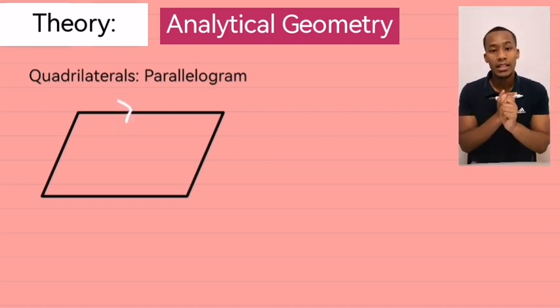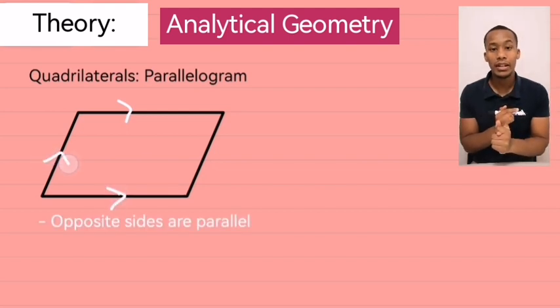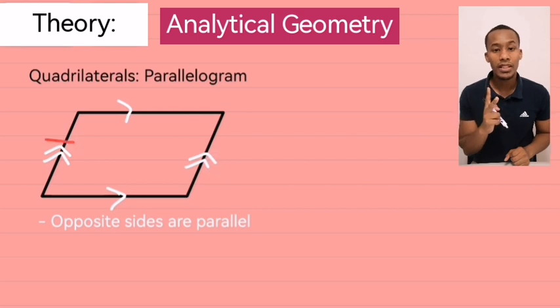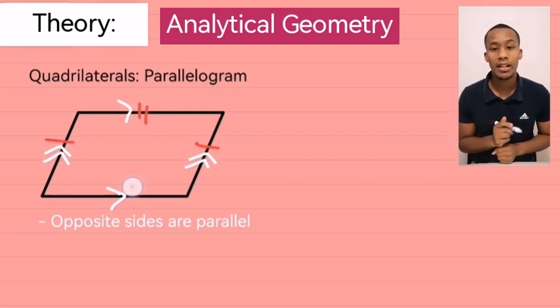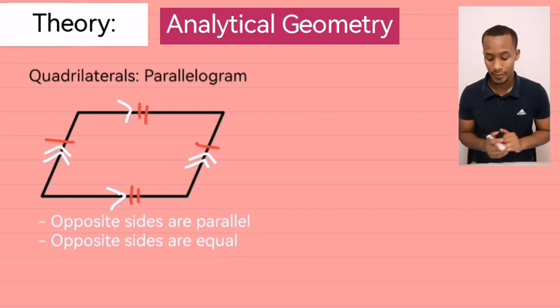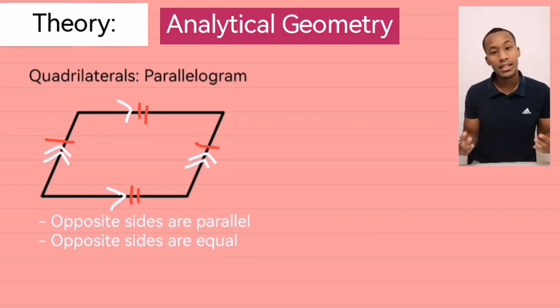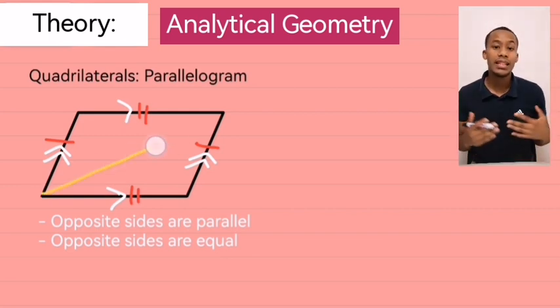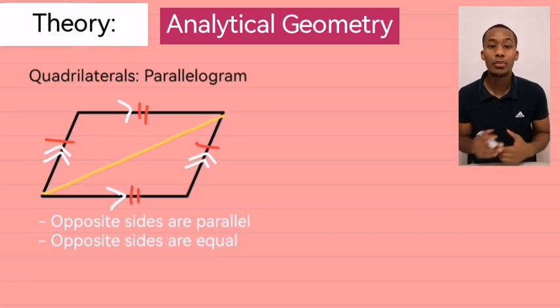its first property is that the opposite sides of a parallelogram are parallel. Second property is that the opposite sides of a parallelogram are equal. The third property is that the diagonals bisect one another.